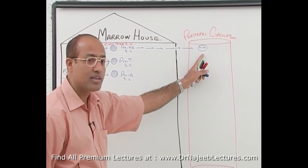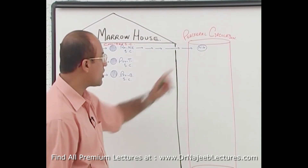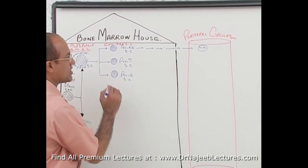So natural killer cells are not T cells and not B cells. Next, we come to pro-T cells.